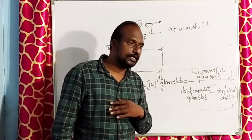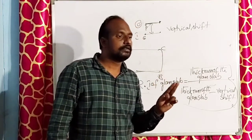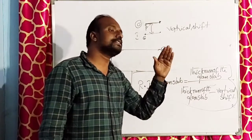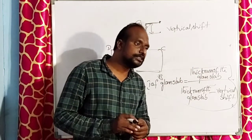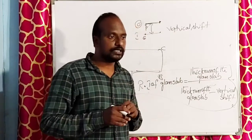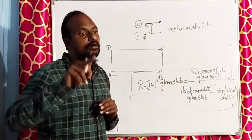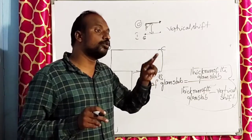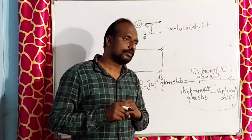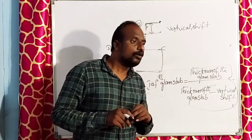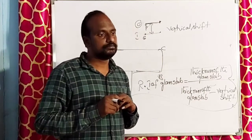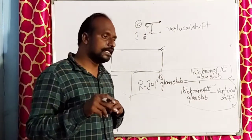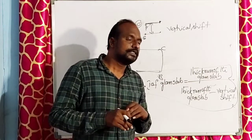What is the formula for critical angle? Sine C equals 1 by n. Example: if the refractive index is root 2, what is the critical angle? The critical angle is 45 degrees, since sine 45 equals 1 over root 2.